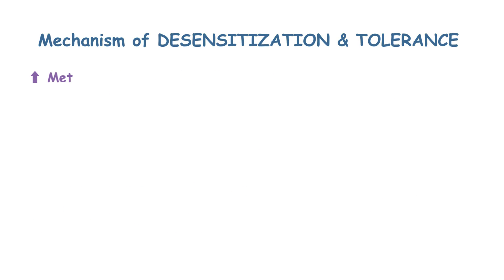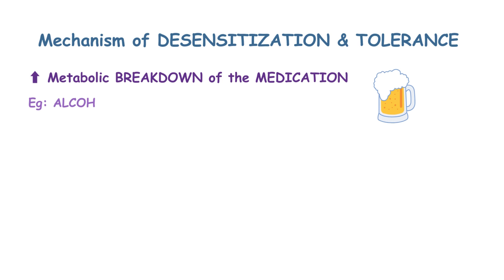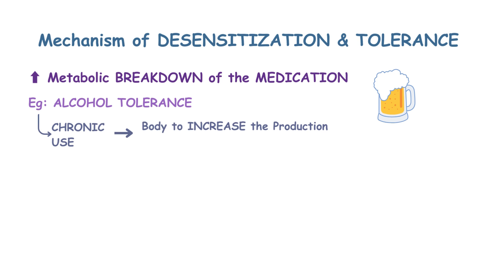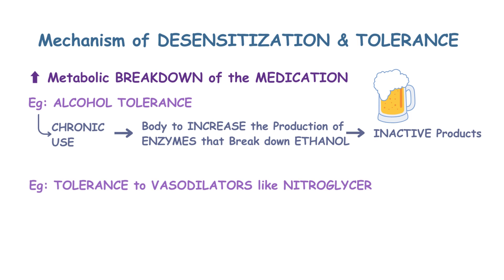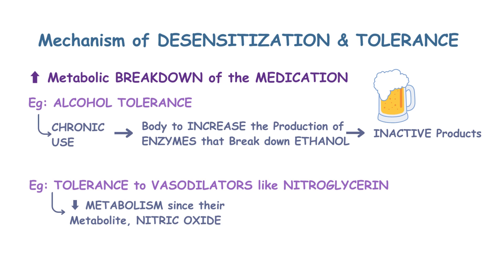Another mechanism is the increased metabolic breakdown of the medication. An example is alcohol tolerance, where chronic use causes the body to increase production of enzymes that break down ethanol into inactive products. On the flip side, tolerance to nitro-vasodilators like nitroglycerin is a consequence of their decreased metabolism, since their metabolite nitric oxide is the substance that causes vasodilation.